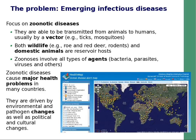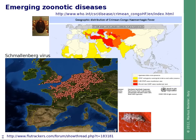It is important to know that a variety of factors cause pathogen spread — environmental, cultural, and political changes. These maps show two examples: the Crimean-Congo hemorrhagic fever and the Schmallenberg virus, which recently appeared in parts of Europe.